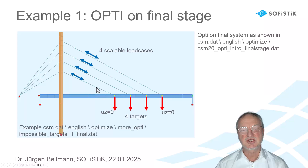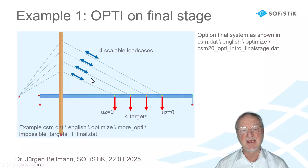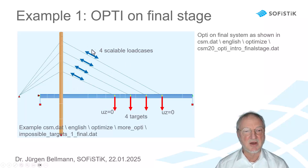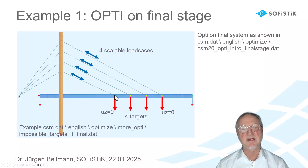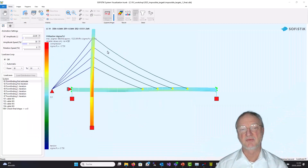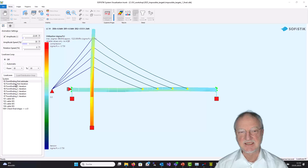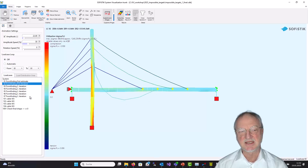FINAL STAGE means we always calculate on the final stage. We first make an estimate for the first run, then calculate the new scalable load case for the targets. As we usually have a non-linear analysis to take into account the cable sagging, we have to make this optimization several times. This is our first run with the estimated pre-stress — we see the cable sagging. When we go to the next iteration optimization, we see the cable sagging is increasing and increasing.